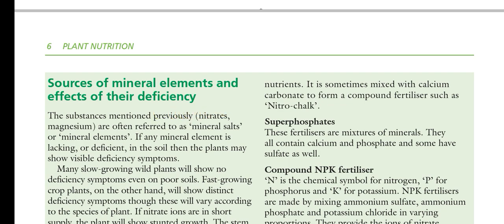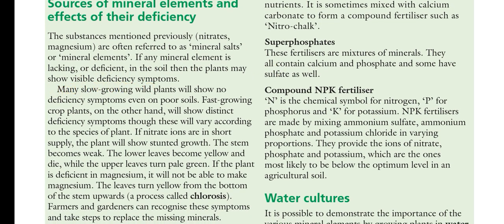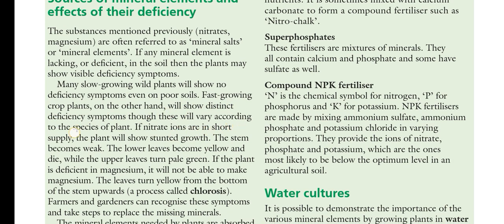Nitrates and magnesium are often referred to as mineral salts or mineral elements. If any mineral element is lacking or deficient in the soil, the plant may show visible deficiency symptoms. Many slow-growing wild plants show no deficiency symptoms even on poor soils, while fast-growing plants show distinct deficiency symptoms that vary according to the species.